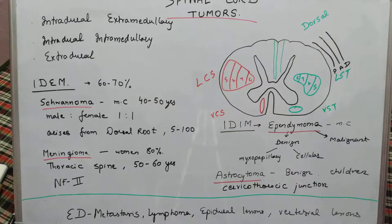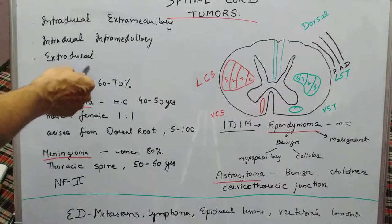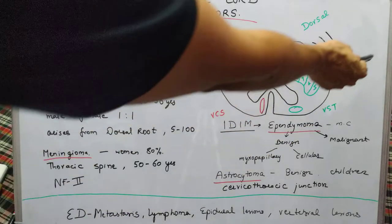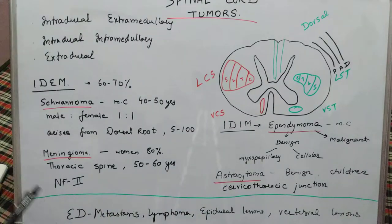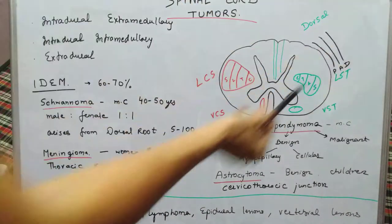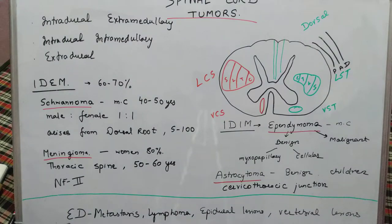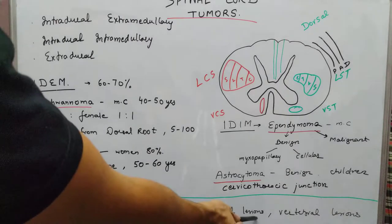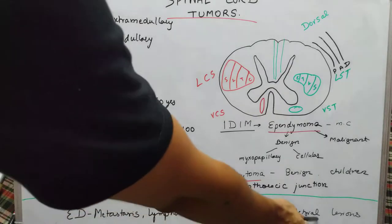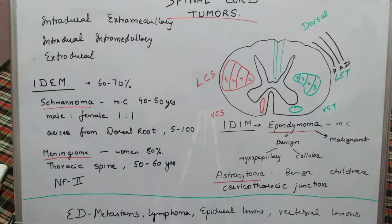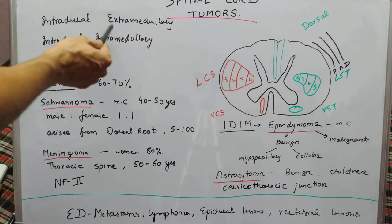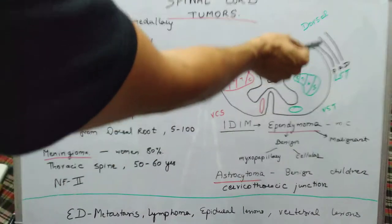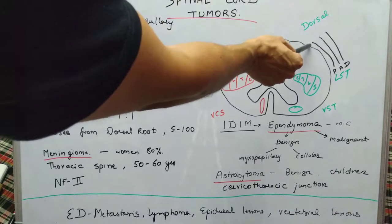For extradural tumors: outside the dura we have the vertebra and the epidural space. The most common extradural tumor is metastasis (primary or secondary). We also have lymphoma, epidural abscess, epidural lesions, and vertebral lesions in this category.